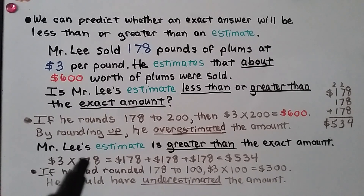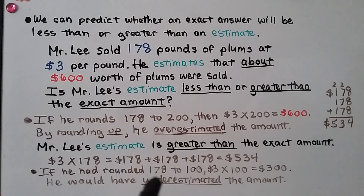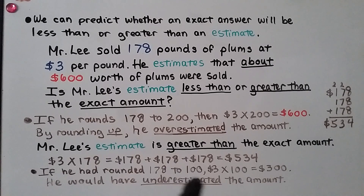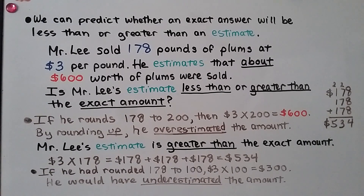$3 times 178 is the same as $178 plus $178 plus $178, which equals $534. Now if he had rounded 178 down to 100, he would have had $3 times 100 equals $300 — that would be an underestimate. But he actually estimated greater than the exact amount by estimating $600.